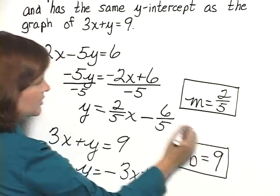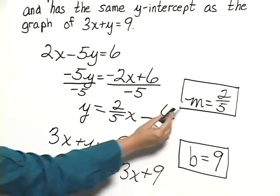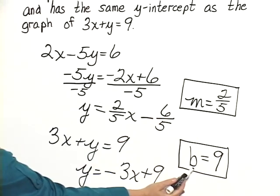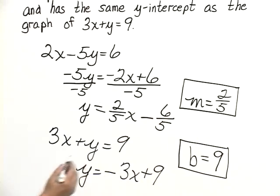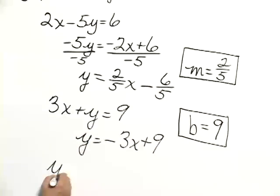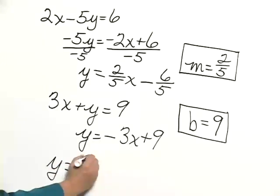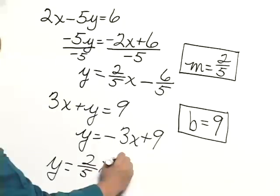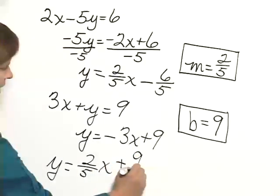Now from these two pieces of information, we have our slope and we have our y-intercept. So we can write the equation of the line that we're looking for, y equals 2 fifths x plus 9.